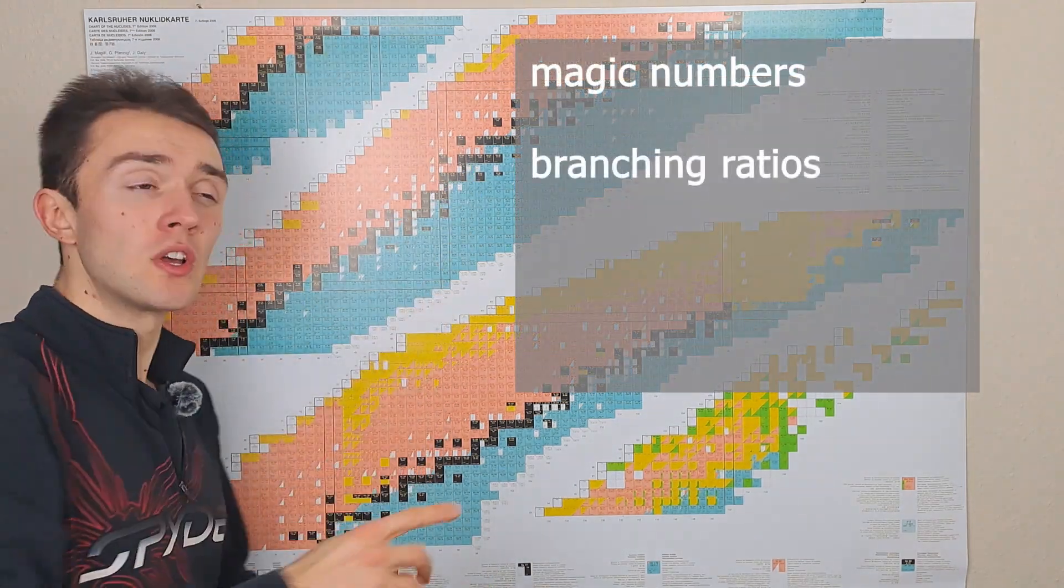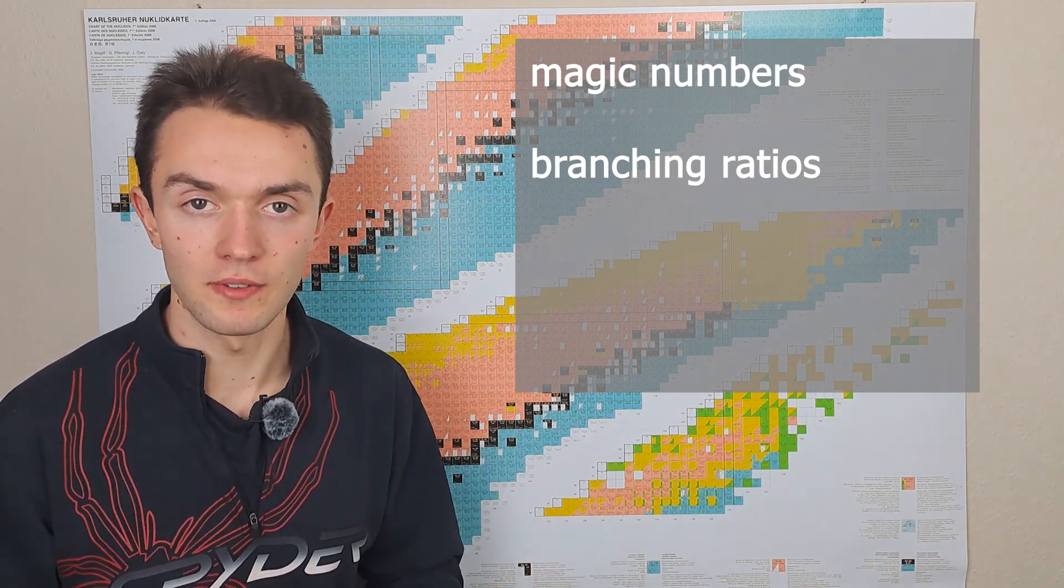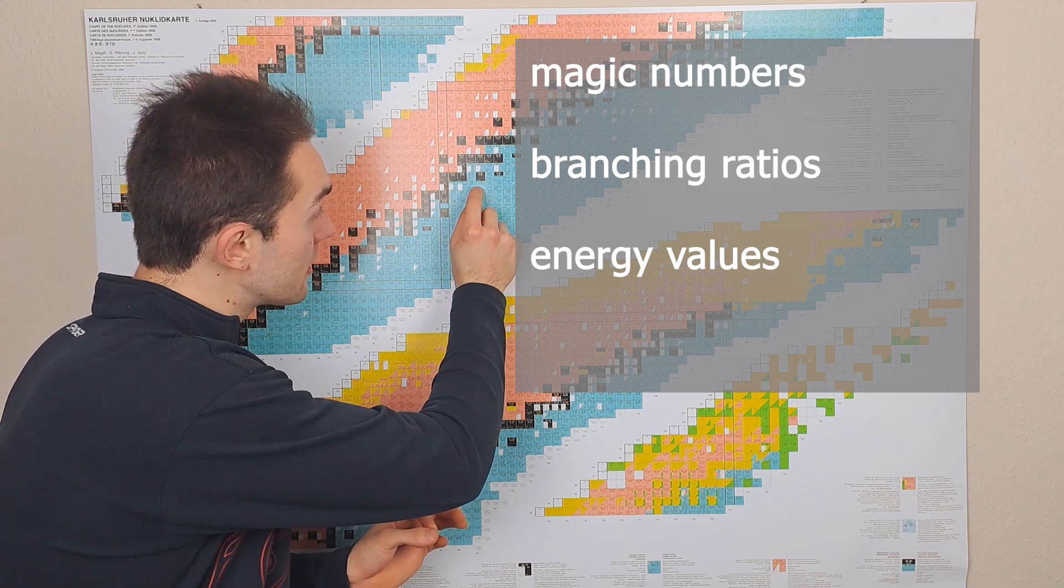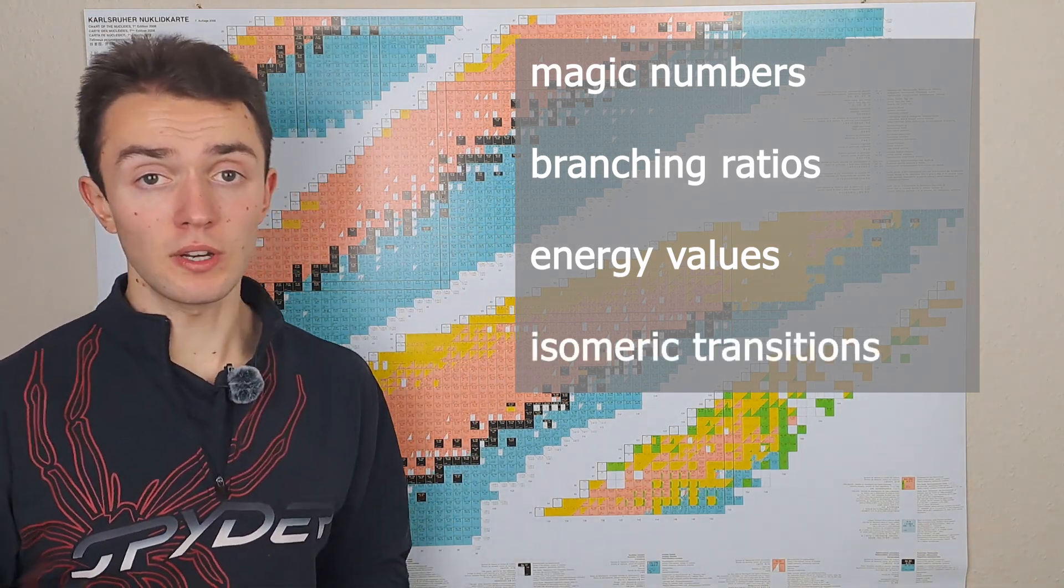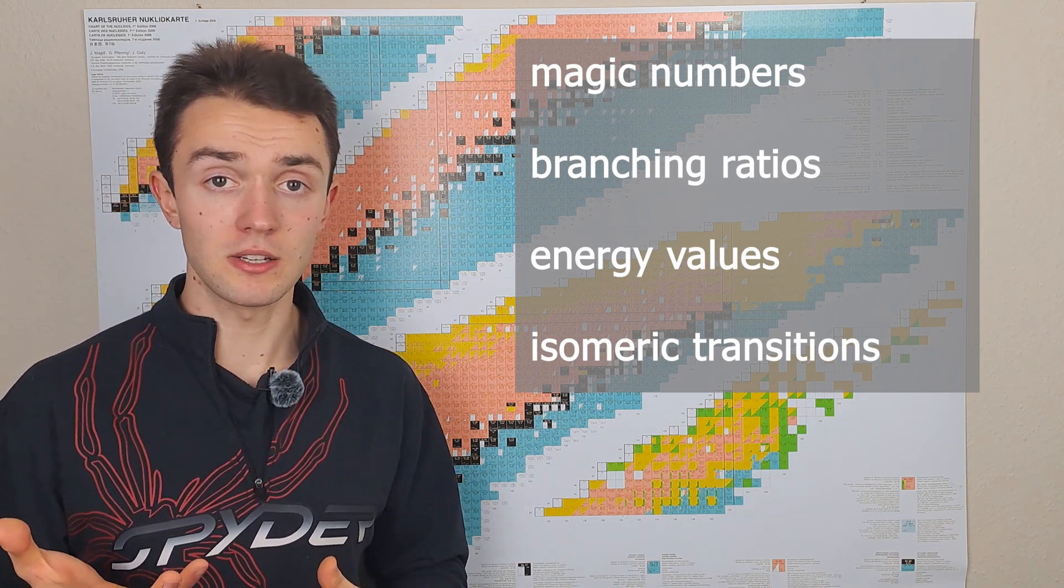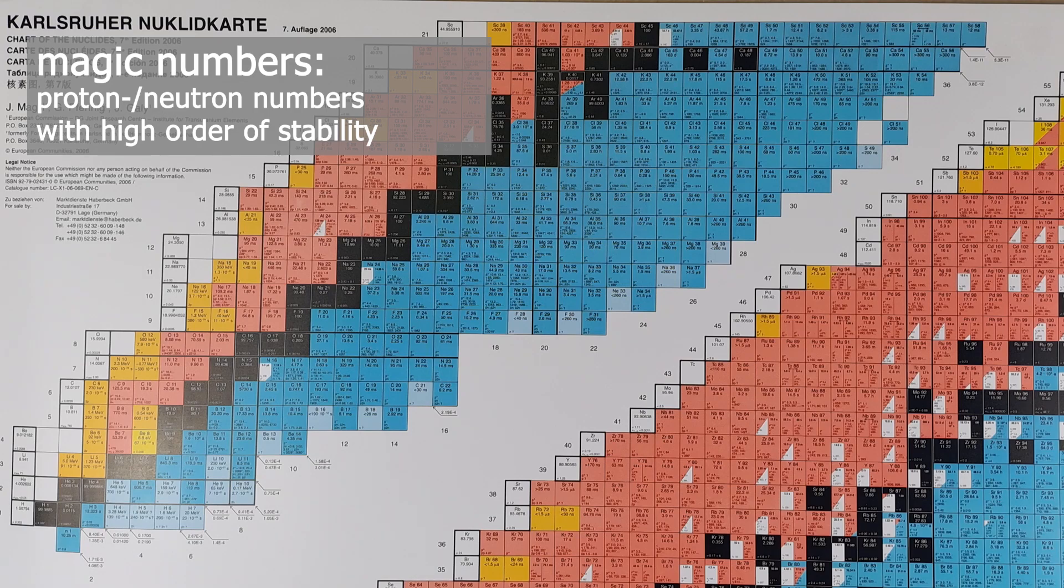What are magic numbers? What are different decay modes and branching ratios for a given isotope? Some more energy values that are written down in these tiles in addition to the half-life, and what are isomeric transitions such as the transition from technetium-99m to technetium-99g? So let's start with magic numbers.